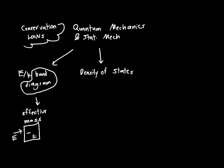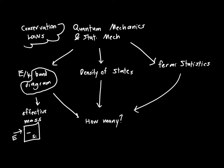And then the last thing we're going to go over is what are called Fermi statistics. And these are closely tied to the density of states. And we're going to use all of these things, so the band diagrams, density of states, and Fermi statistics to answer the question, how many, or how many charge carriers do I have?